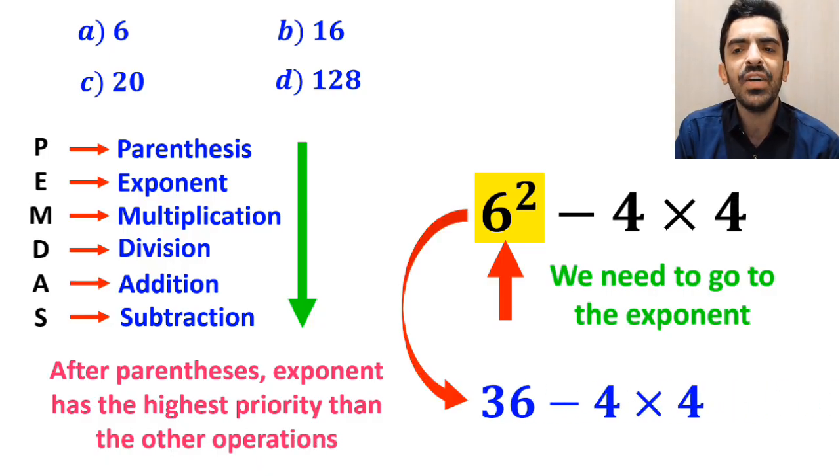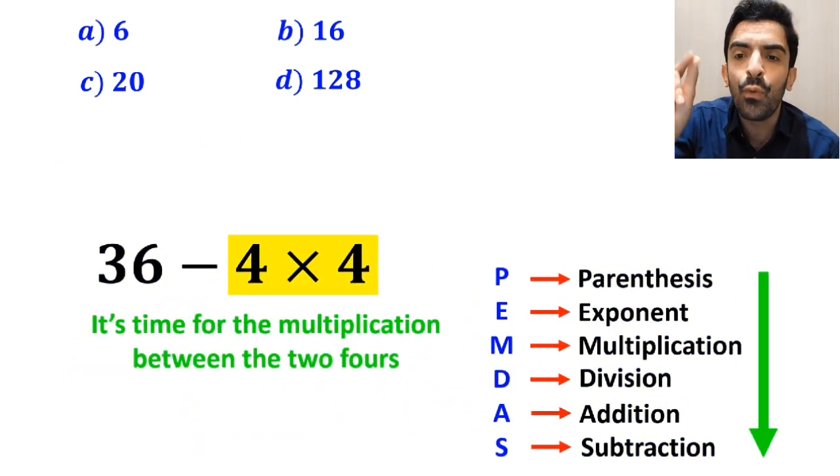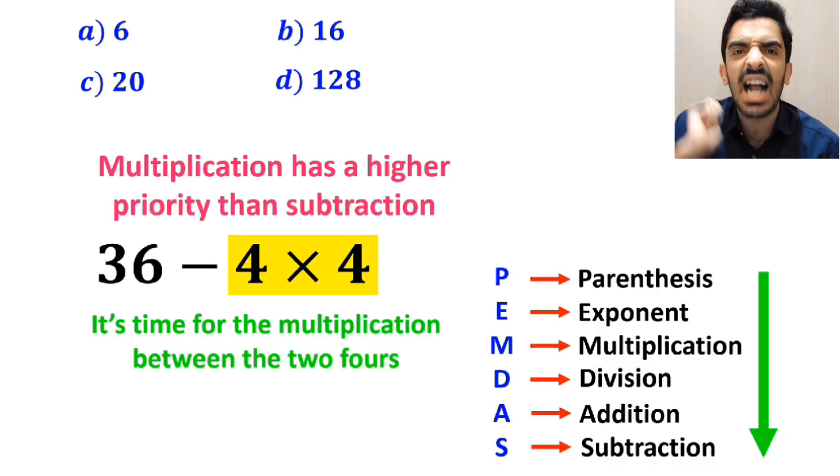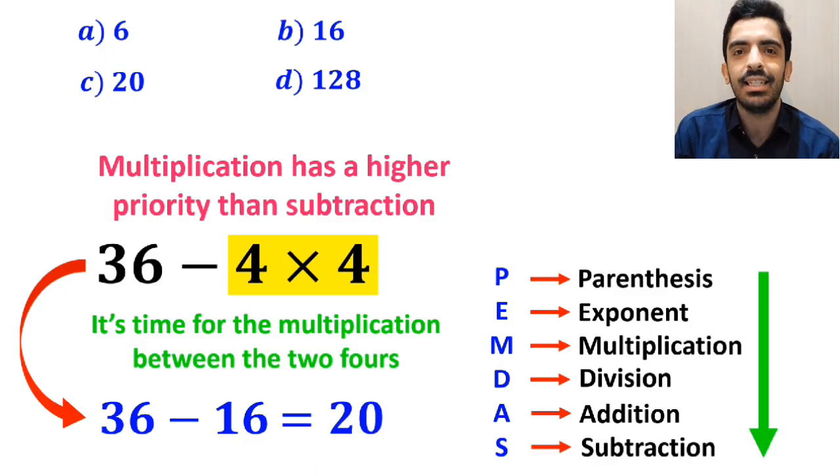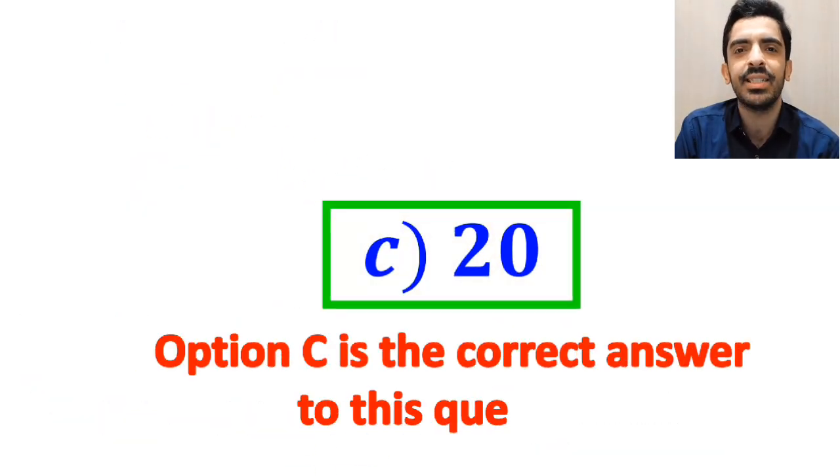This expression simplifies to 36 minus 4 multiplied by 4. And the final step it's time for the multiplication between the two 4's because multiplication has a higher priority than subtraction. So, we'll write this expression as 36 minus 16 which ultimately gives us the answer 20. Therefore, option C is the correct answer to this question.